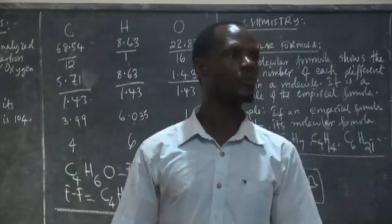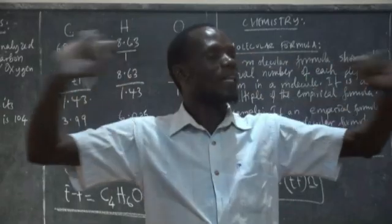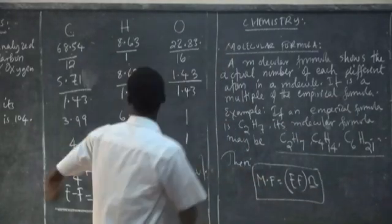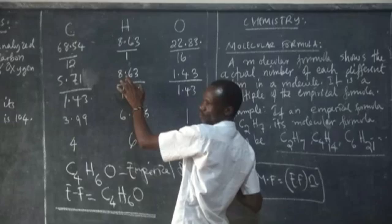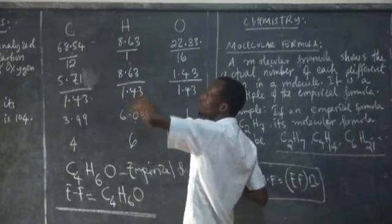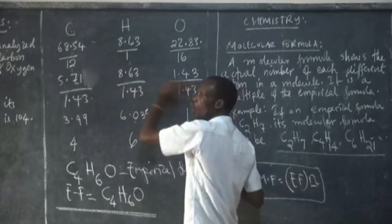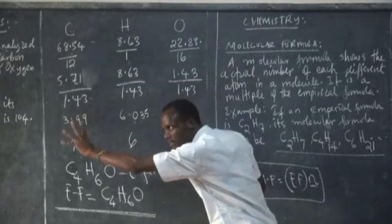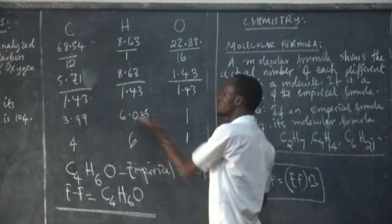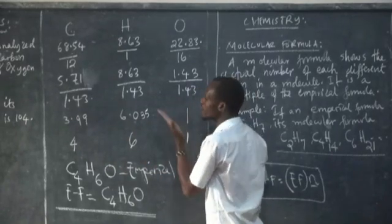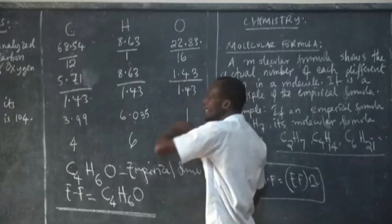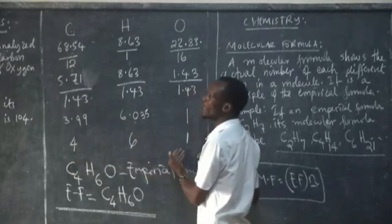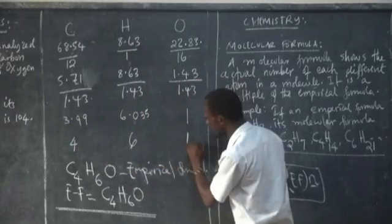To summarize the process: you list your elements, write their respective percentages or masses, divide by the relative atomic masses, then obtain the resulting numbers. Among all the numbers, find the smallest one. Divide all values by the smallest number. You may get decimal values — do not approximate directly. Write what you got, then approximate those numbers to whole numbers: four carbon, six hydrogen, and one oxygen.